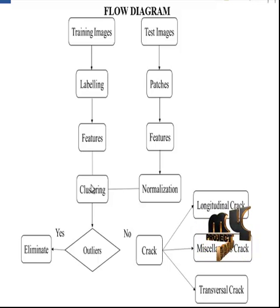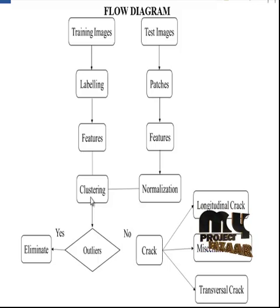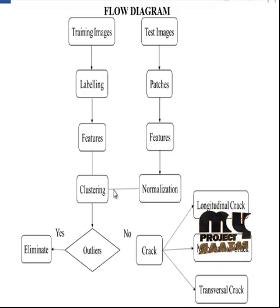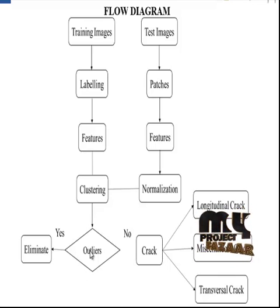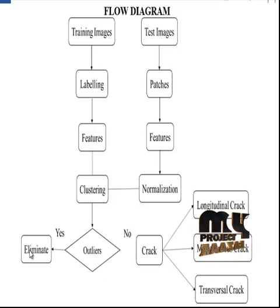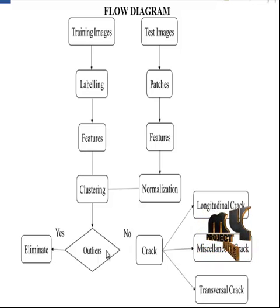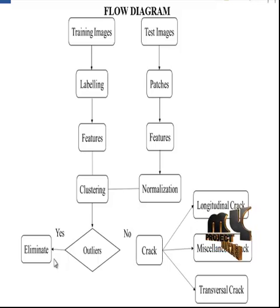The combination of normalized and training features produces a clustered result. Based on the identified regions, outliers were detected by specifying particular ranges for each region. If patches were detected as outliers, they were eliminated — represented in black pixels. Otherwise, they were considered as cracks.